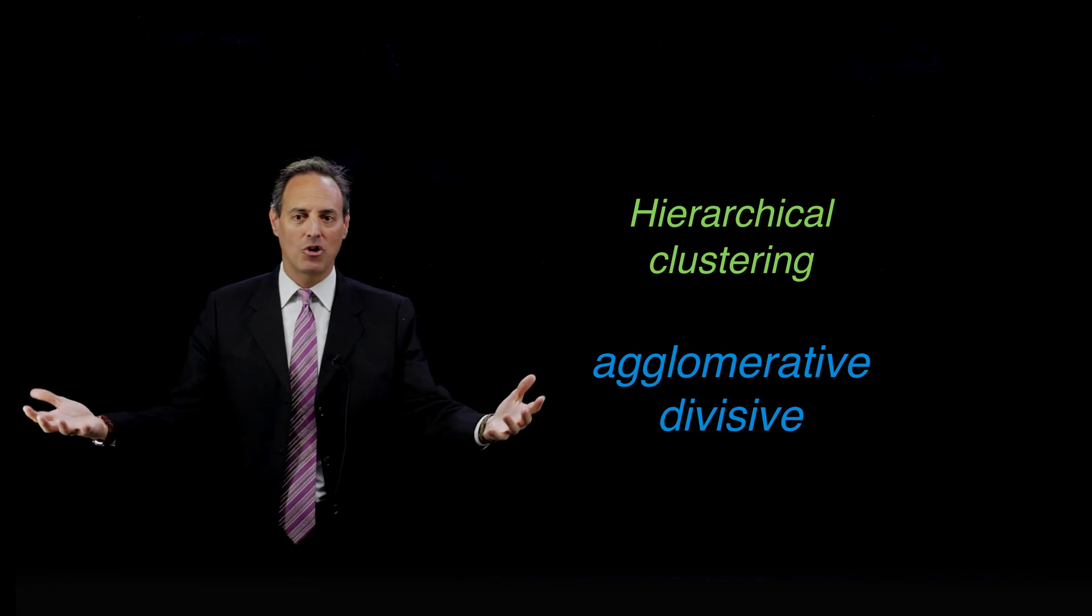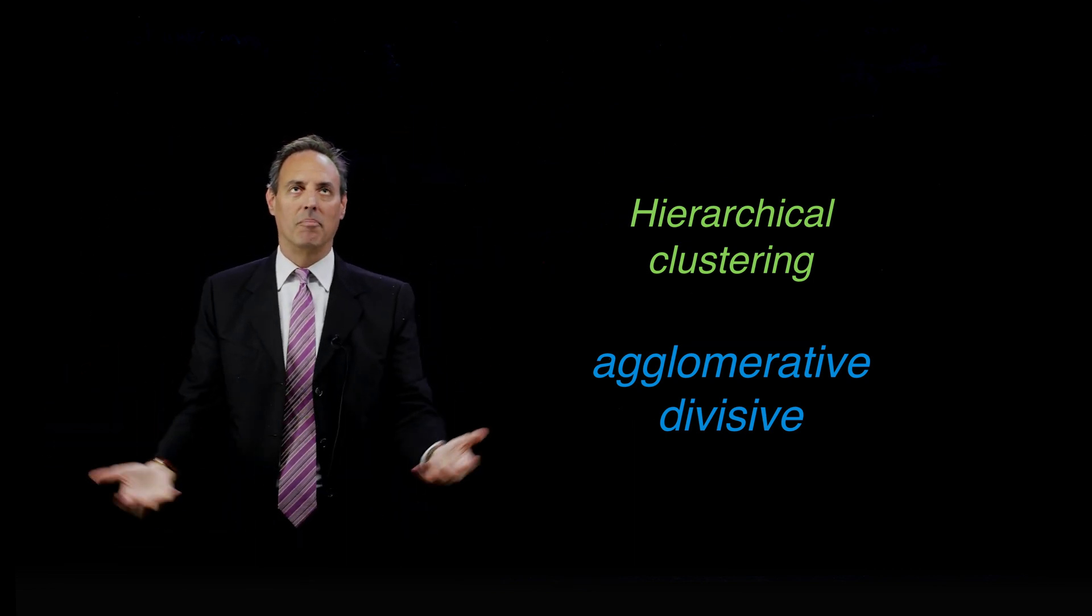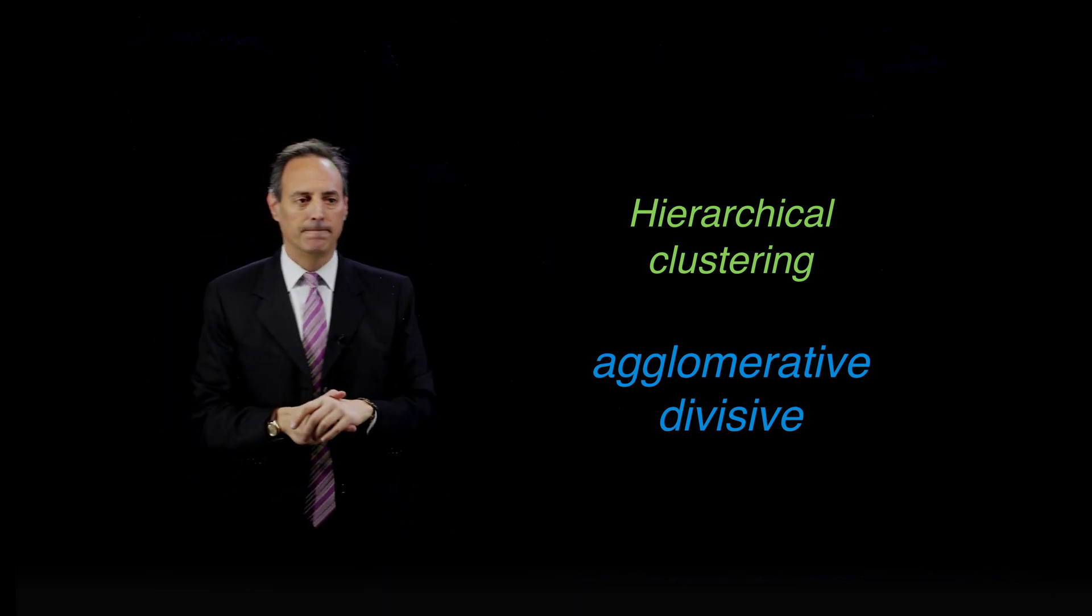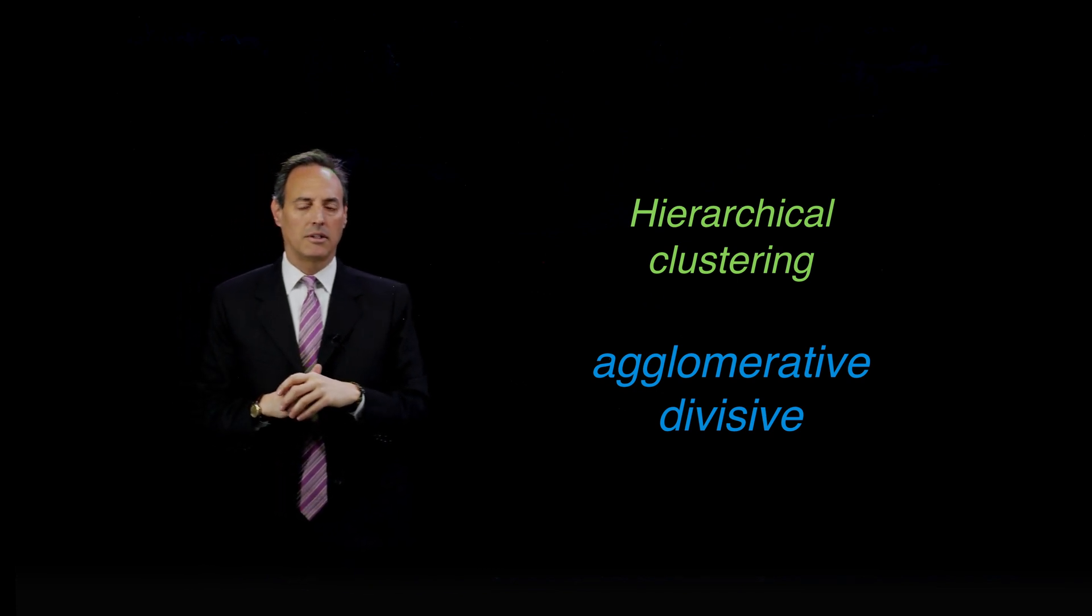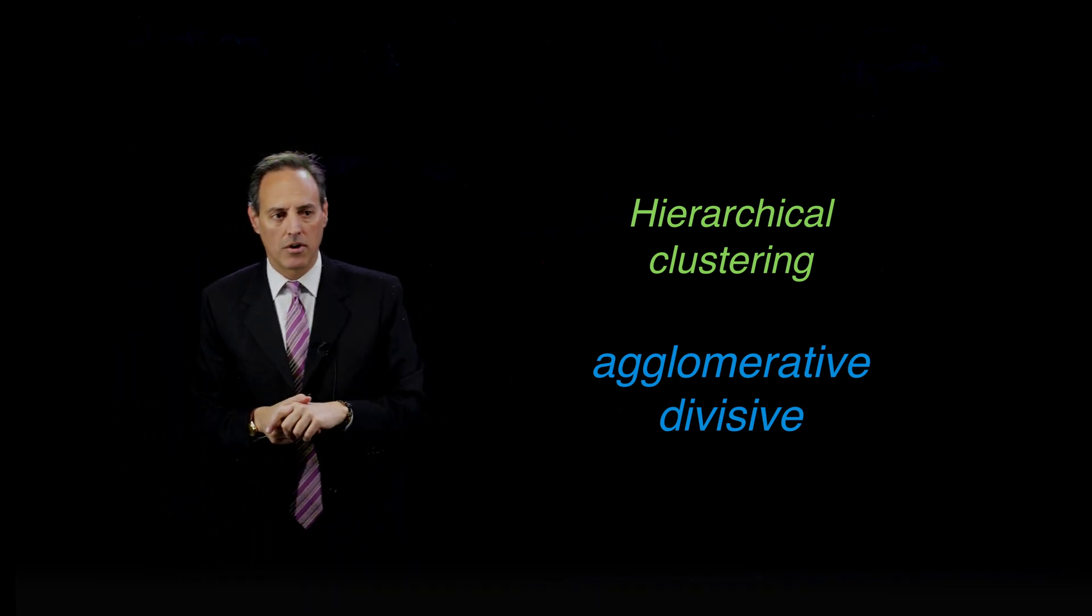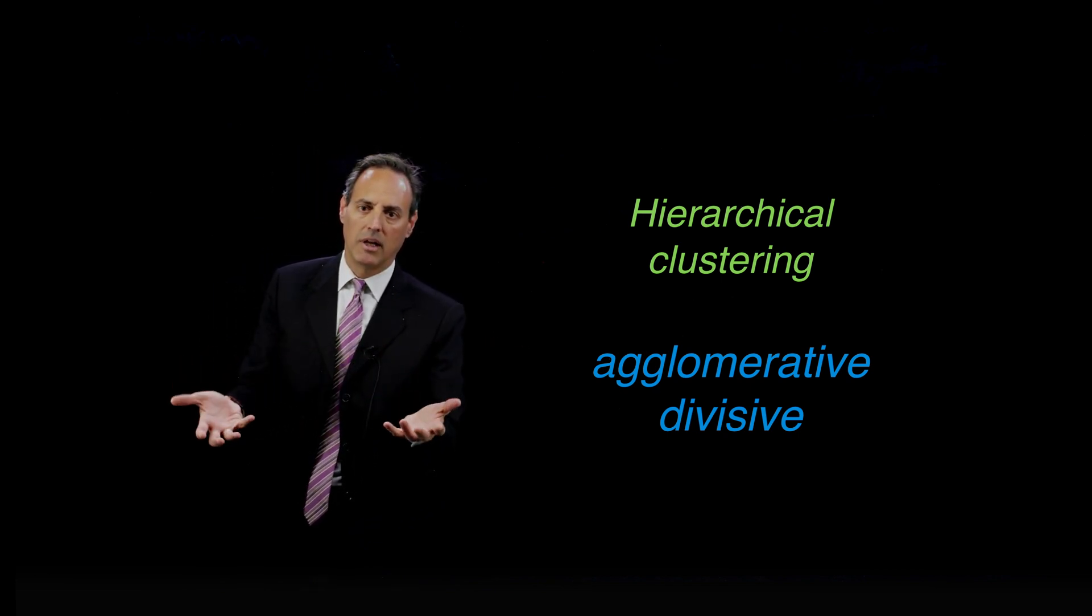The alternative to this is to instead start off with each point is its own cluster. So you have n clusters, and then start combining clusters. So that you start off with n clusters and you aggregate all the way up to the top to the one super cluster. So in one case you go from bottom up, the other one you go from top to bottom. Those are the two types of hierarchical clustering that you would have available to you. And we're mostly going to focus on starting off with every point as a cluster and moving up and aggregating as we go.